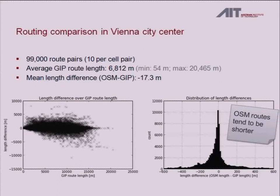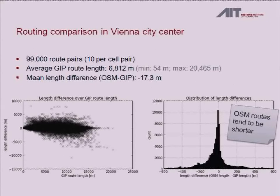Going further than what's in the paper, we compared actual routing results on the two network graphs. We chose the central 10×10 cells of Vienna and calculated routes in both graphs — 10 routes per cell pair, making 99,000 routes with an average length of almost 7 kilometers. The distribution of length differences shows that OpenStreetMap routes tend to be shorter, with a mean difference of only 17 meters. This could be because there are more shortcuts or because it lacks some restrictions, allowing shorter routes which in practice are not permitted — we need to look into more detail.